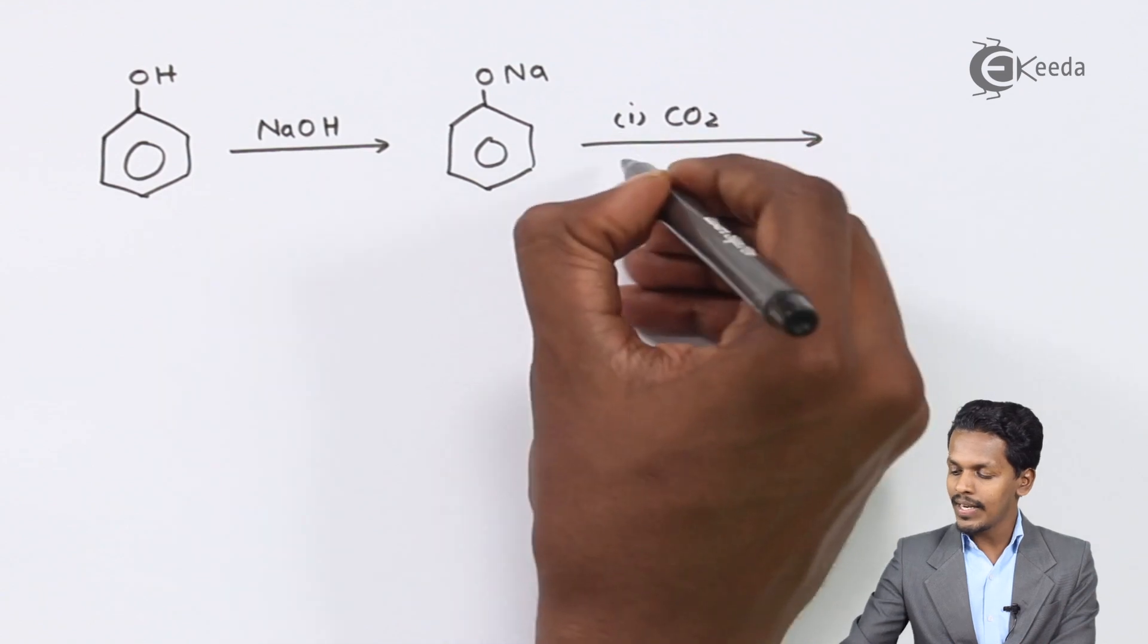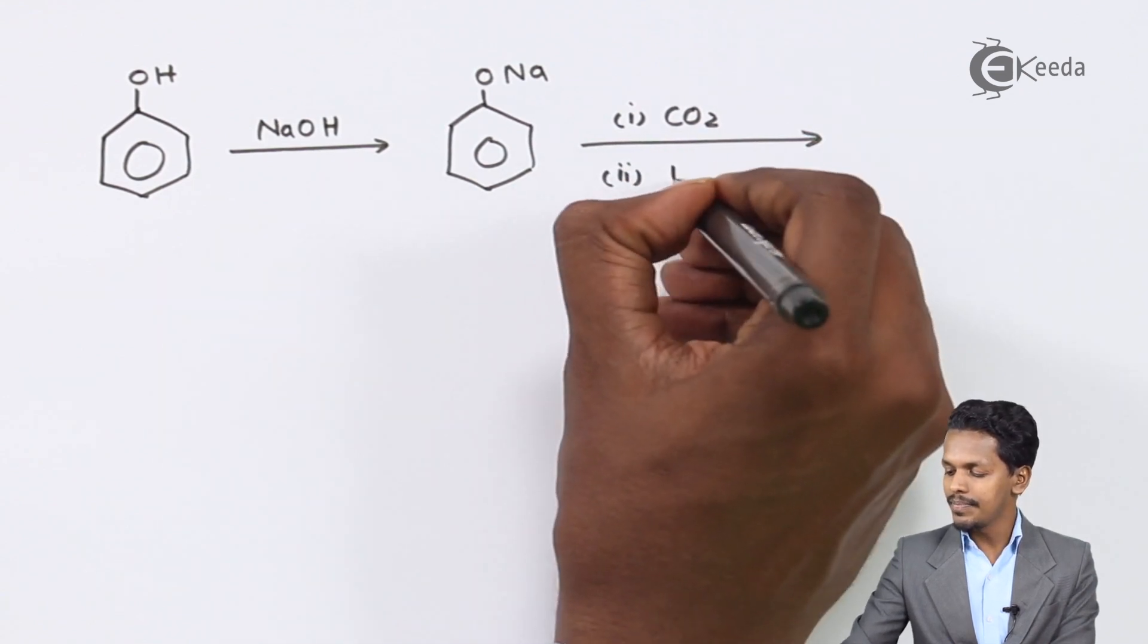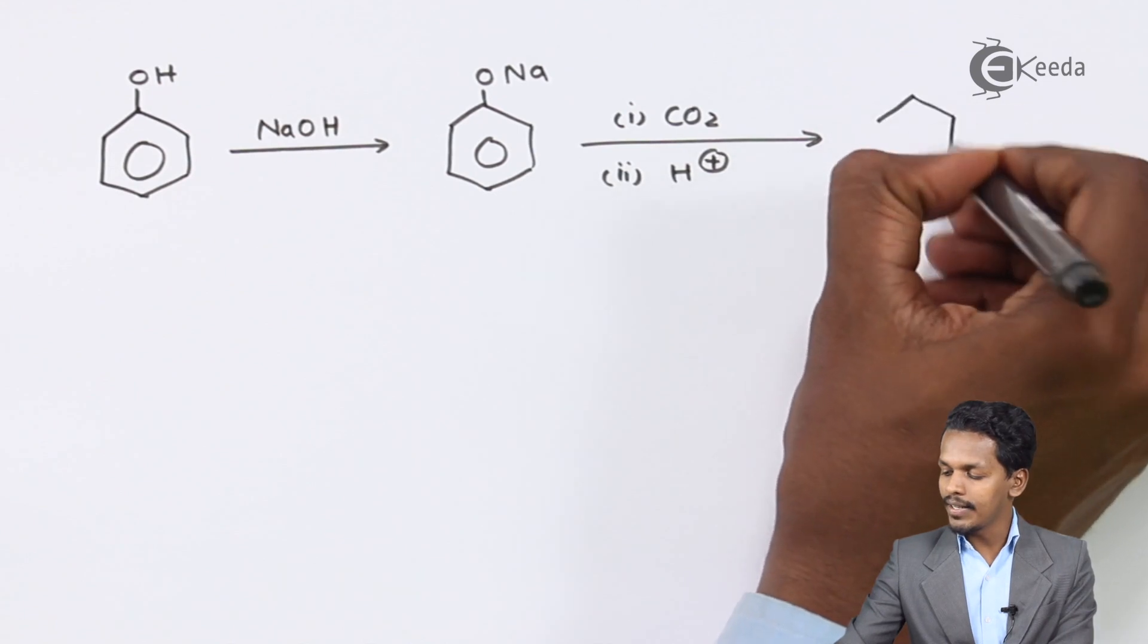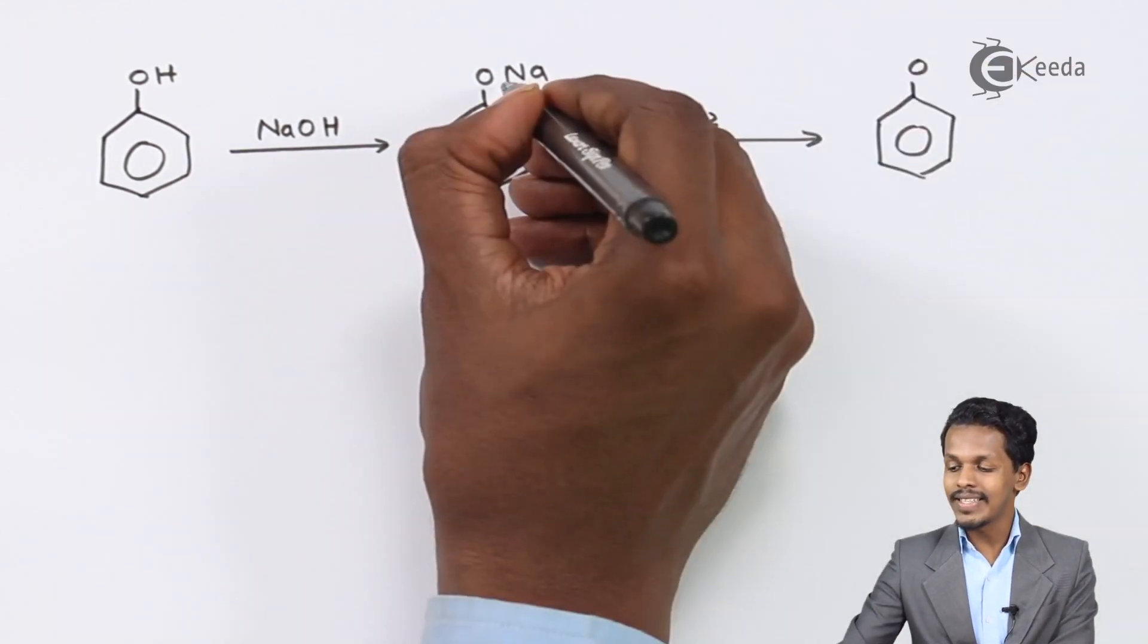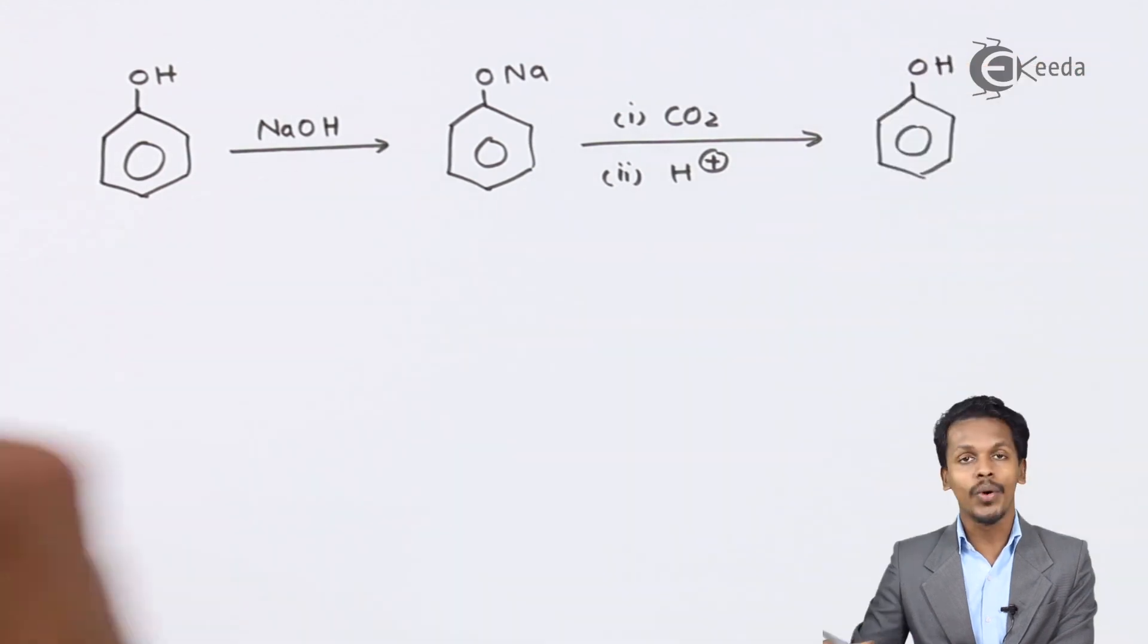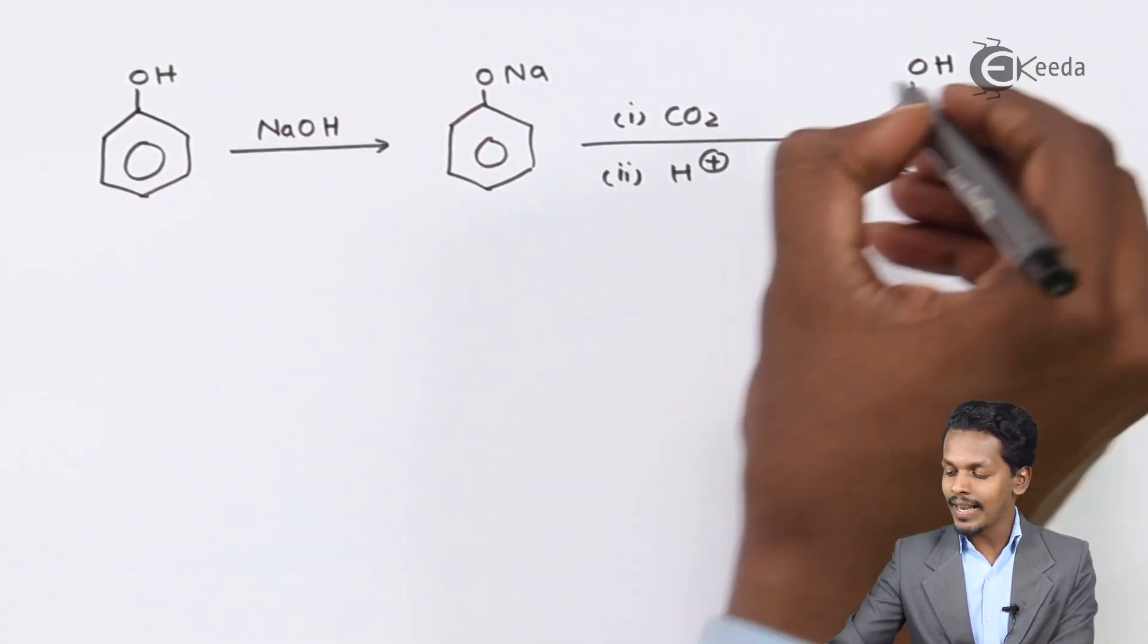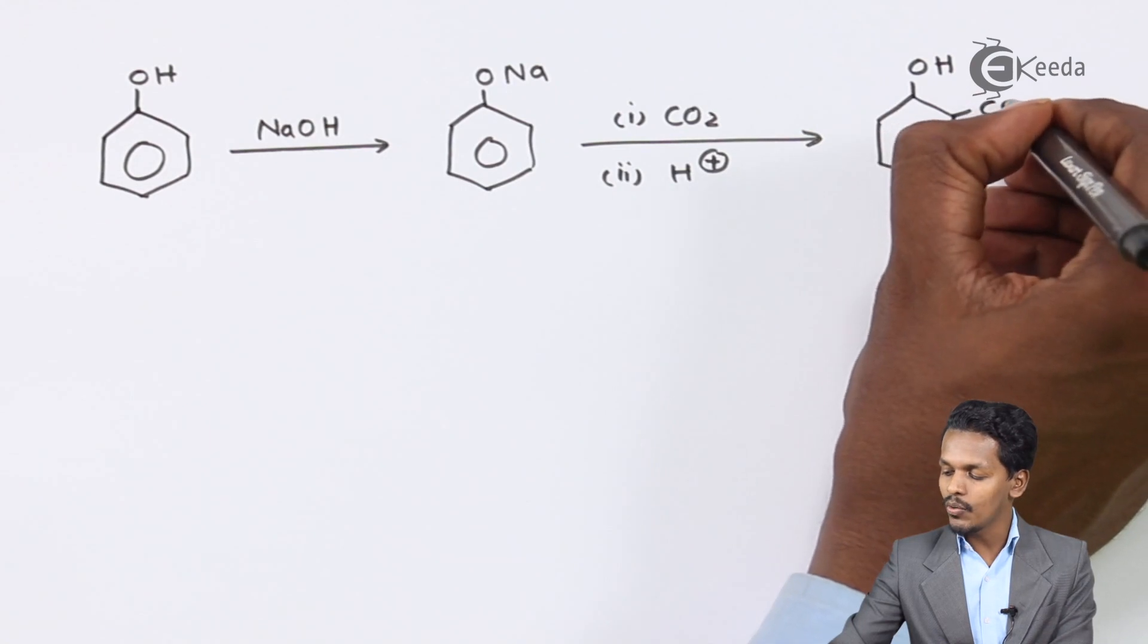So therefore in presence of carbon dioxide and in acidic condition, that is in presence of H+, the product that we could obtain here is, so this will turn into, that is this ONa it will turn into OH, while this CO2 will basically add to the phenoxide ion and therefore we could get COOH.